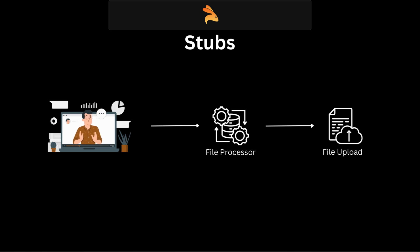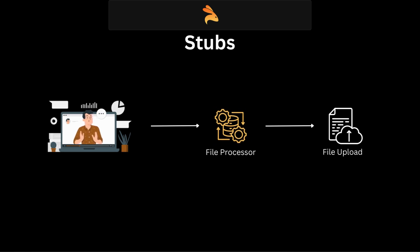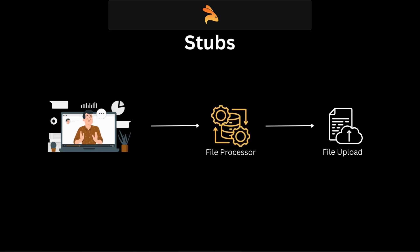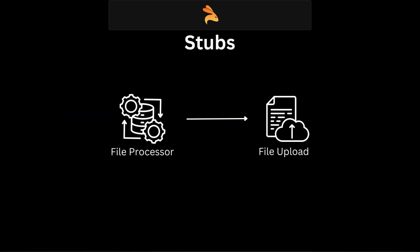Now, if you want to unit test your file processing module, you need to isolate it from its dependencies — and the dependency here is the file uploading service. So to temporarily eliminate the dependency, we take the help of a stub.